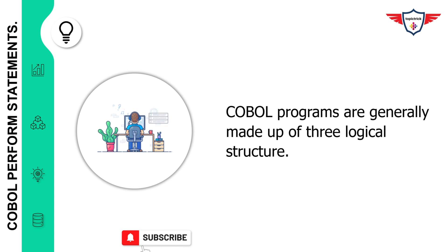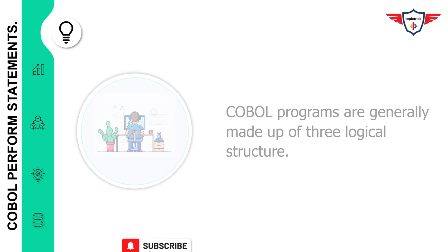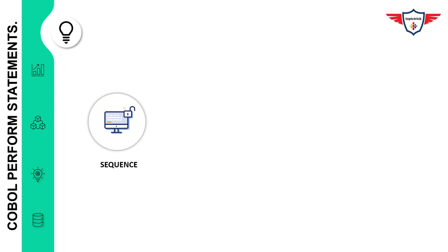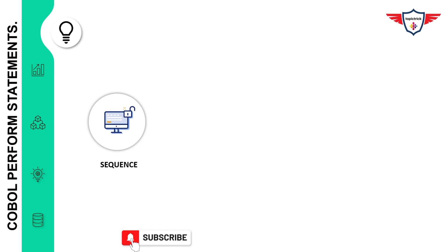COBOL programs are generally made up of three logical structures. The first one is sequence, the second one is selection, and the third one is iteration. A sequence structure basically includes one or more functions that are executed in a specific sequence. For example, if you have a couple of paragraphs that need to be executed one by one, you can use a perform statement to execute that piece of logic across different paragraphs.